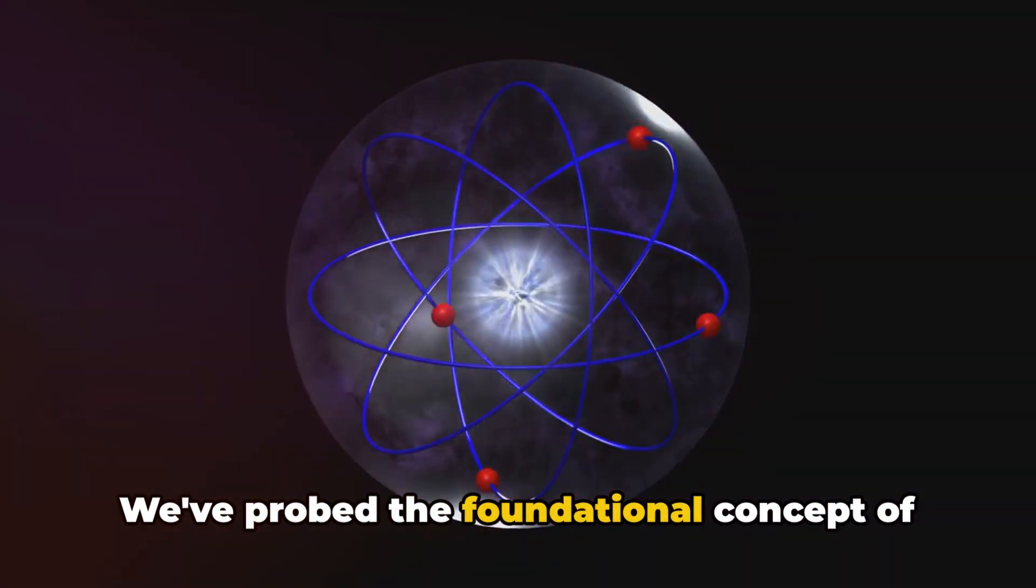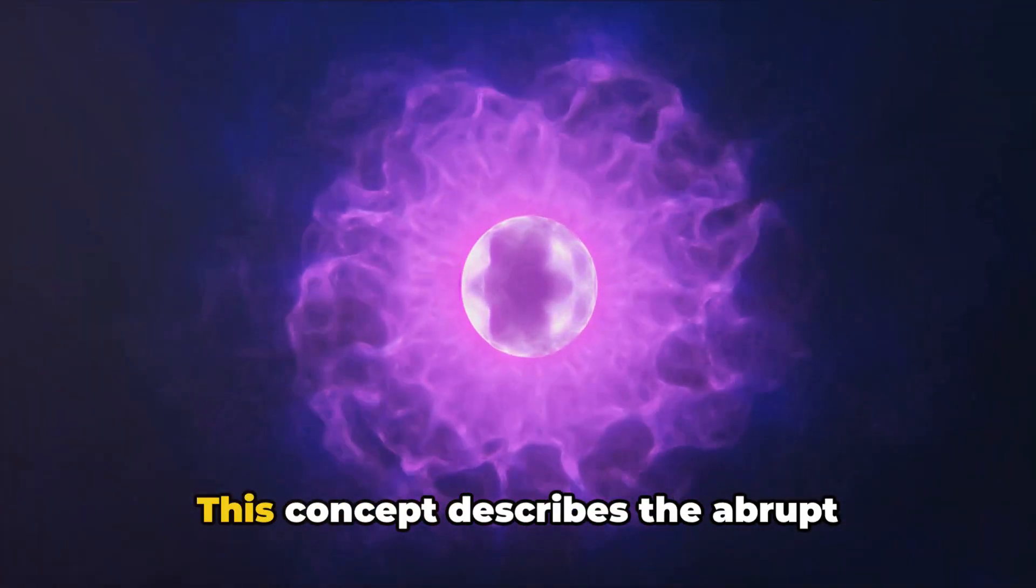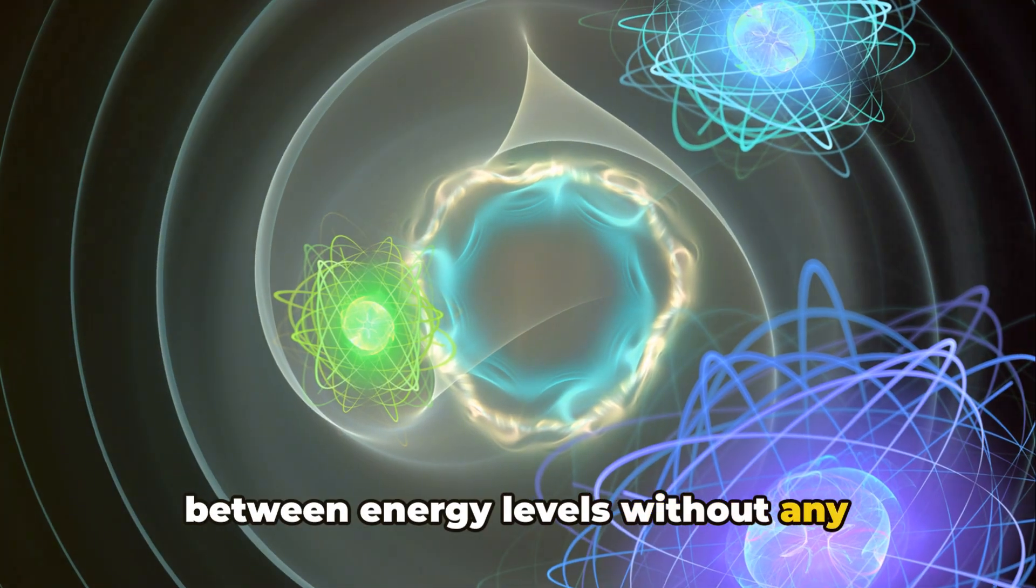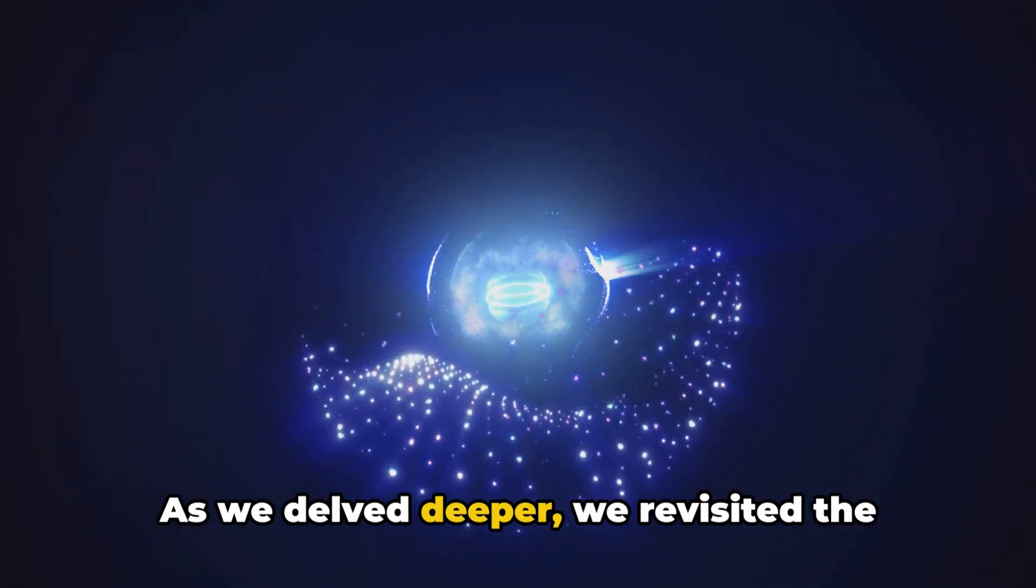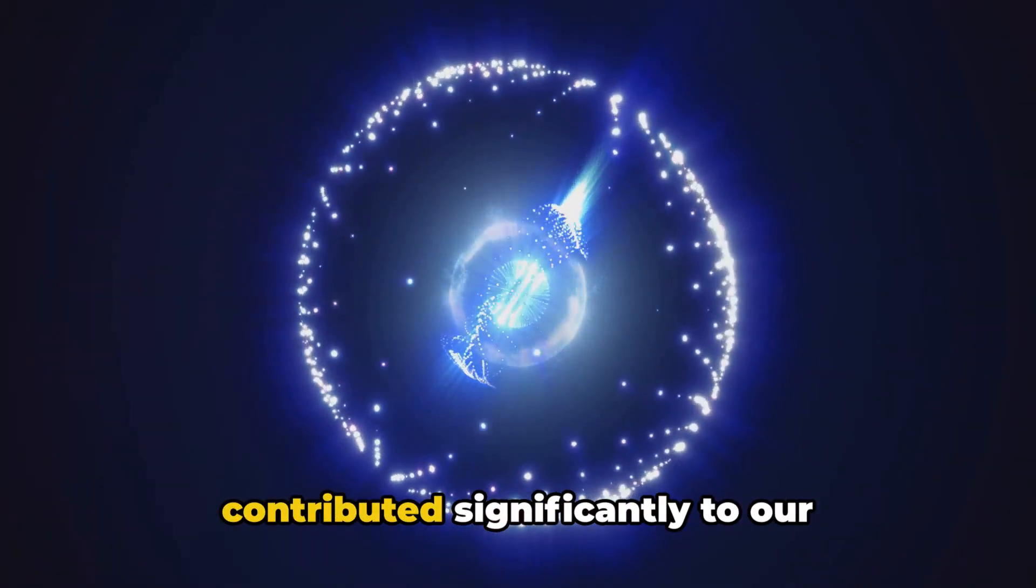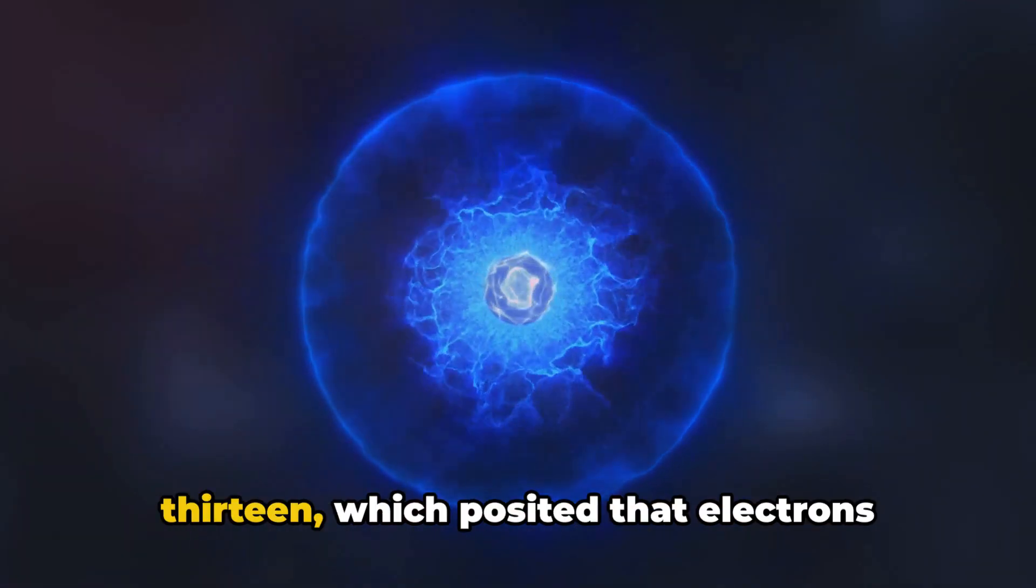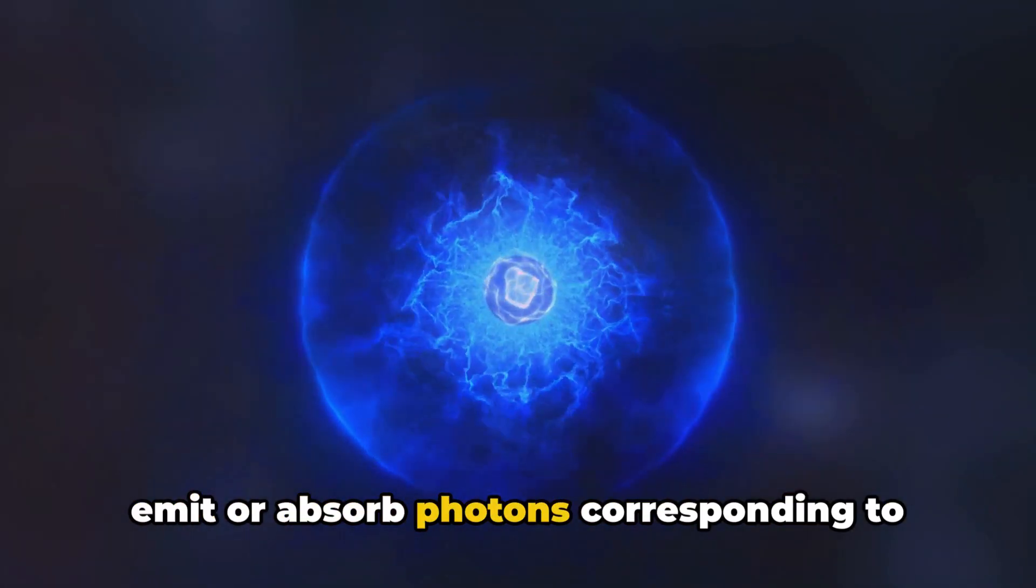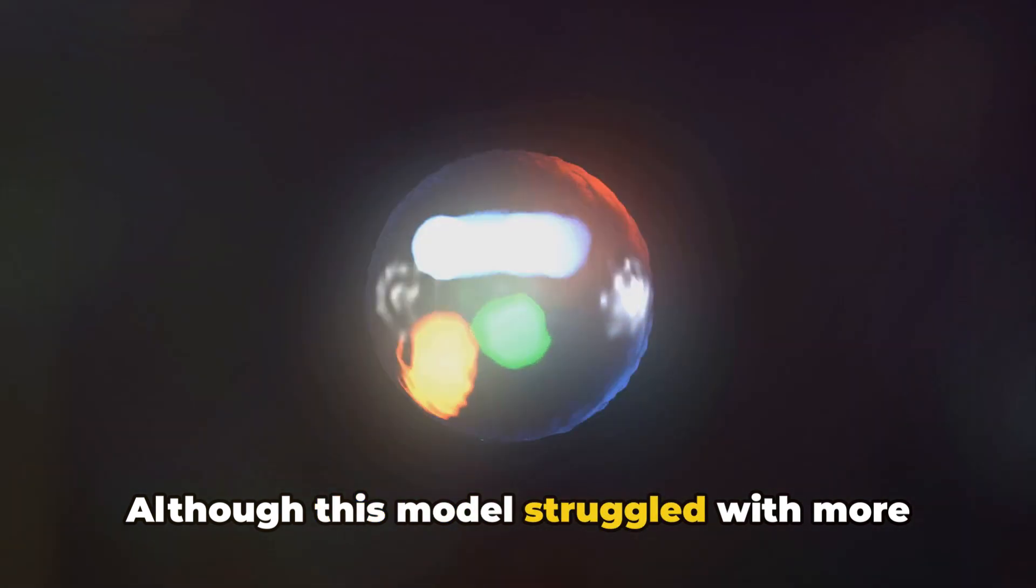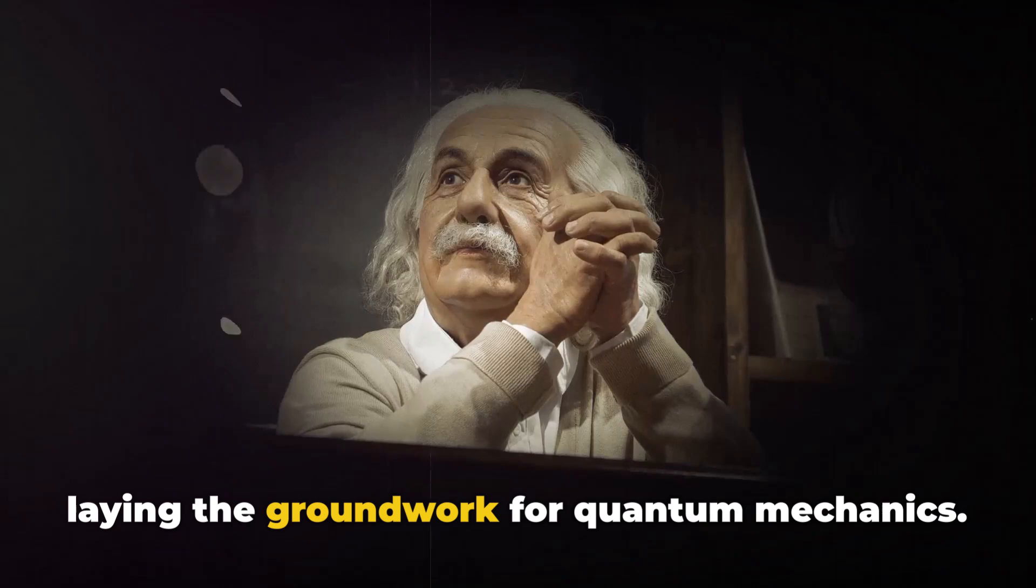We've probed the foundational concept of quantum jumps, a controversial yet pivotal idea in the realm of quantum mechanics. This concept describes the abrupt transitions of electrons within an atom between energy levels without any intermediate states. As we delve deeper, we revisited the early 20th century where key physicists like Niels Bohr and Erwin Schrödinger contributed significantly to our understanding of quantum mechanics. We explored Bohr's model from 1913 which posited that electrons emit or absorb photons corresponding to energy differences when they jump between quantized energy levels. Although this model struggled with more complex elements, it successfully explained hydrogen's emission spectra, laying the groundwork for quantum mechanics.